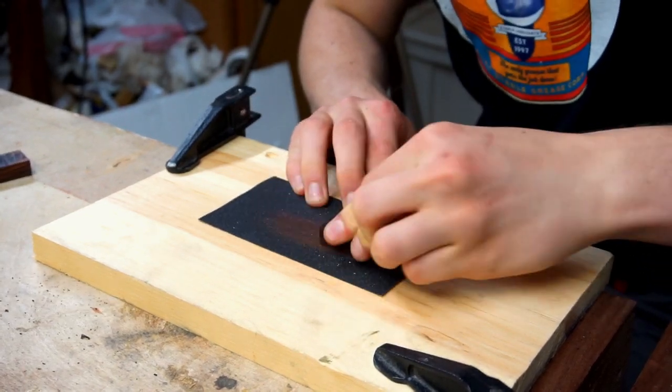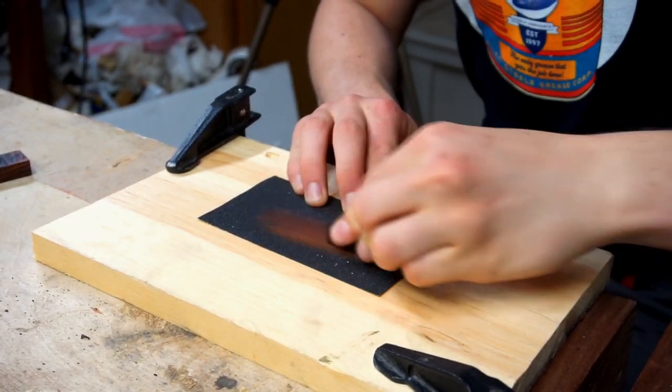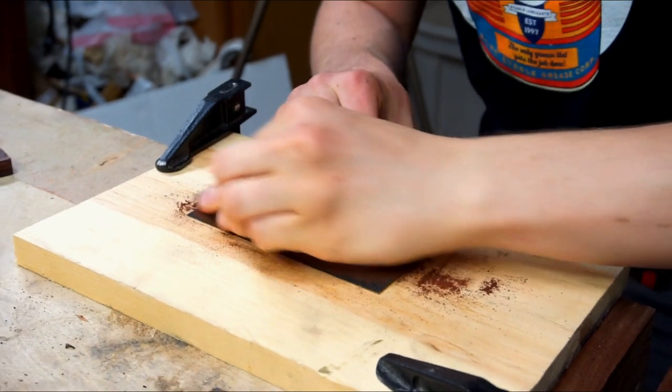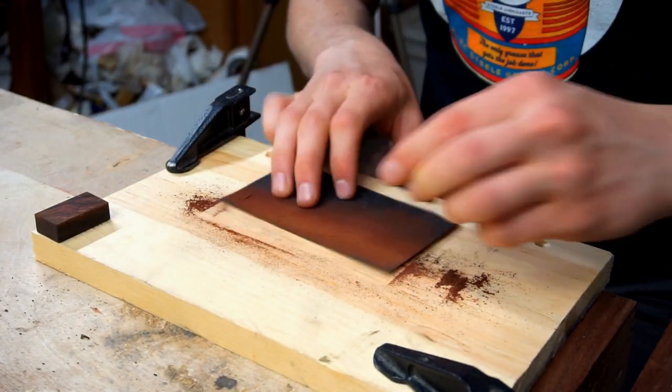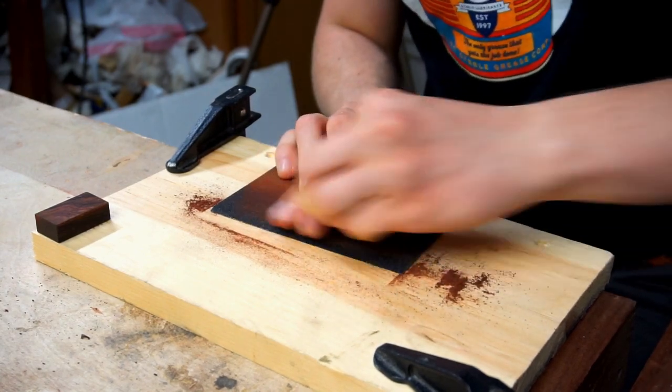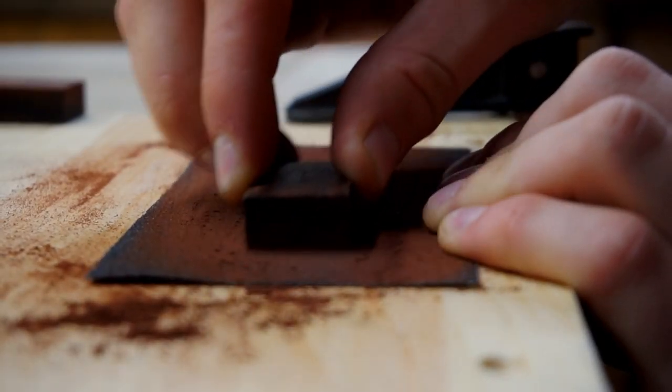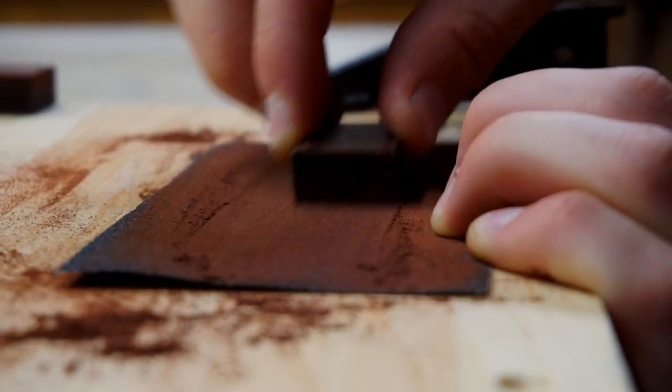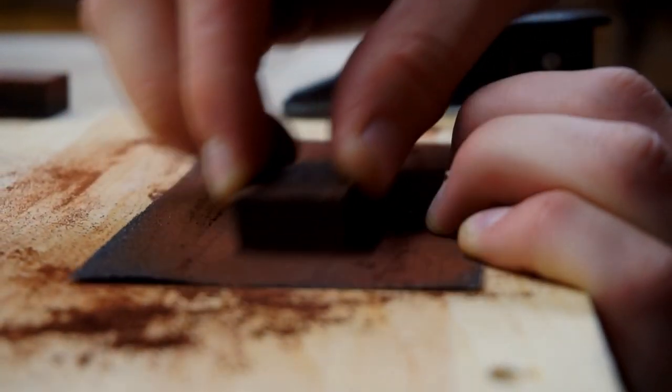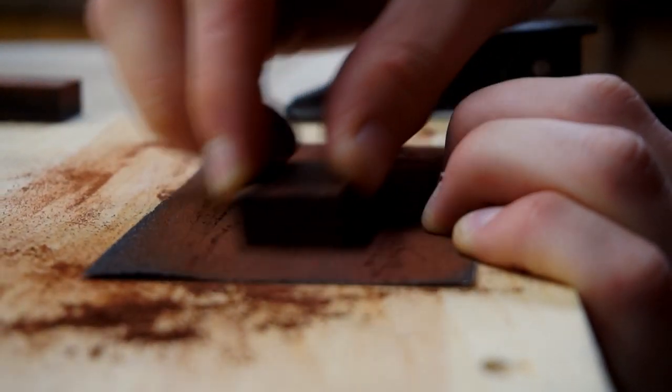I moved on to sanding with 80 grit sandpaper to clean up the cut and get a better look at the patterning. Because the Cocobolo is so oily, it would clog up my sandpaper very quickly. Now you can really see the shape that is there.